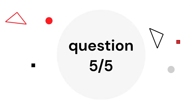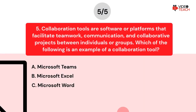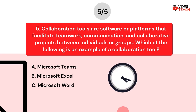Question number five. Collaboration tools are software or platforms that facilitate teamwork, communication, and collaborative projects between individuals or groups. Which of the following is an example of a collaboration tool? Option A: Microsoft Teams. Option B: Microsoft Excel. Option C: Microsoft Word. Now you have about 15 seconds to think about your answer.